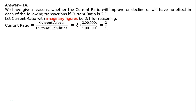Question 14. State, giving reason, whether the current ratio will improve, decline, or have no effect in each of the following transactions, if the current ratio is 2:1. Answer 14. We have given reasons whether the current ratio will improve, decline, or have no effect in each of the following transactions if the current ratio is 2:1.